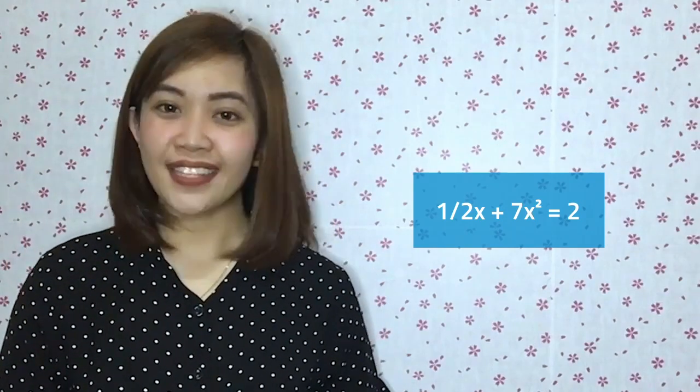How about one-half x plus 7x squared equals 0? This is a quadratic equation because the term with the highest exponent, 7x squared, is of degree two.